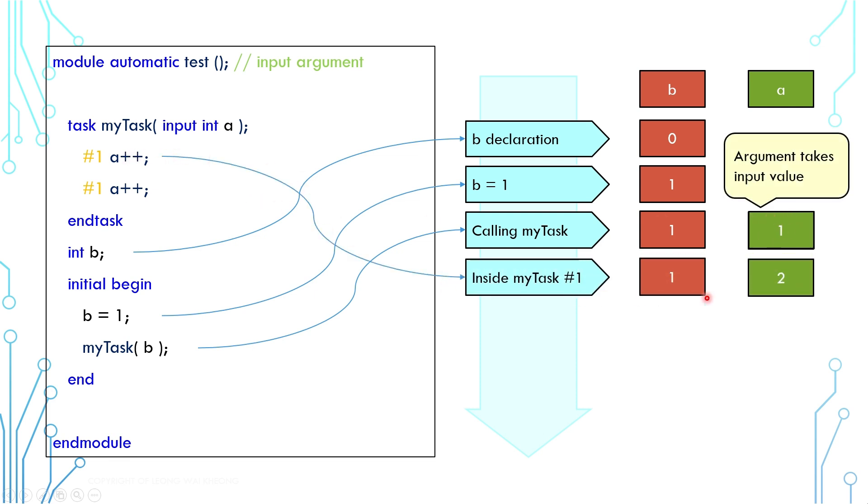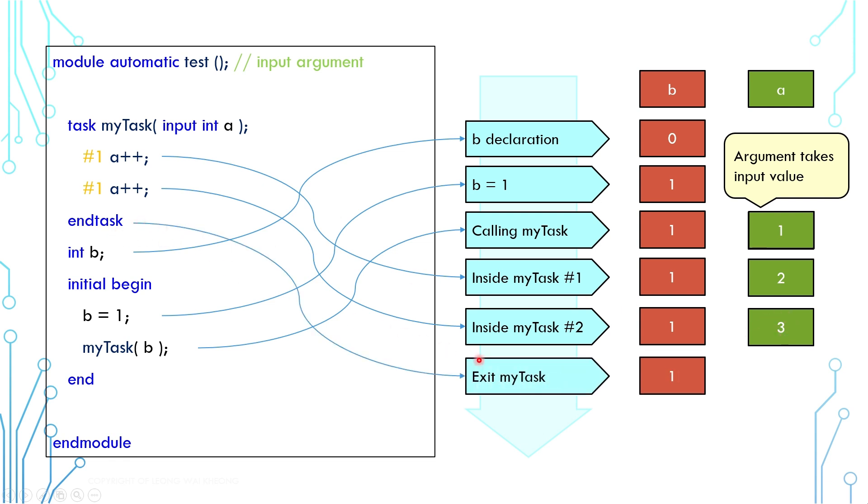At this point, A is incremented to 2 and at this point, A is incremented to 3. And finally at this point, the task ends and the final value of A is 3.